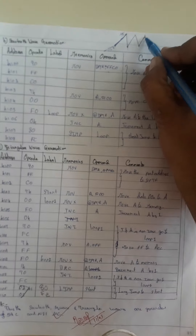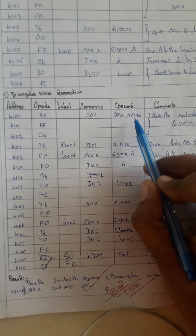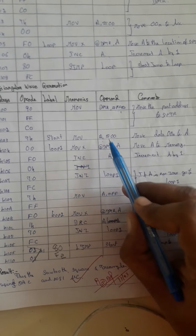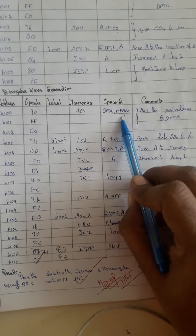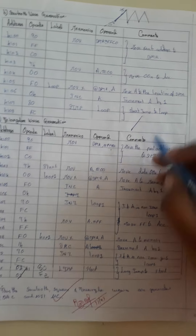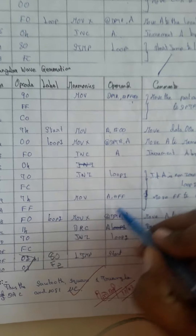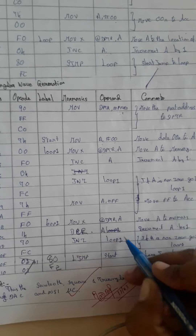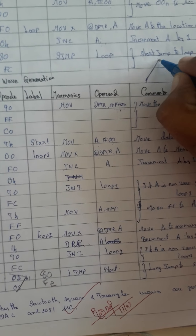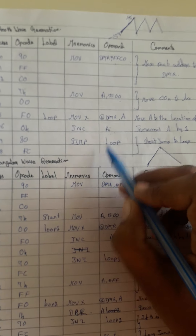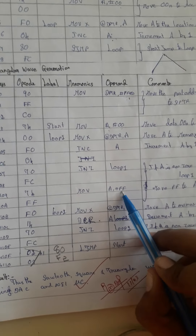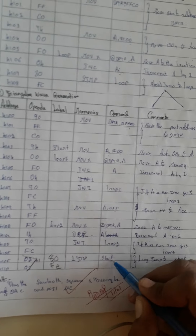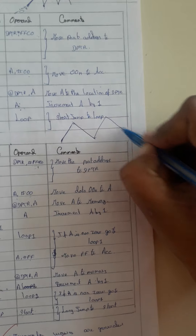For the triangular waveform, we initialize the DAC port address, move 00 to the accumulator, and move that to the DAC address. We increment, and it increments upward. Unlike sawtooth — where it drops directly to 0 after FF — here after reaching FF it is decremented using DCR. It decrements back down, and this is put in a loop so it repeats, generating the triangular waveform.